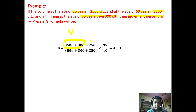Using P = (V minus v) upon (V plus v) into 200 upon n, with n equal to 10 years. We add 300 (from thinning) to the volume, so V becomes 3500 plus 300, and we also add 300 to v. Subtracting the volume at age 50 from the adjusted volume at age 60, we ultimately get an increment percent of 4.13 using Pressler's formula.